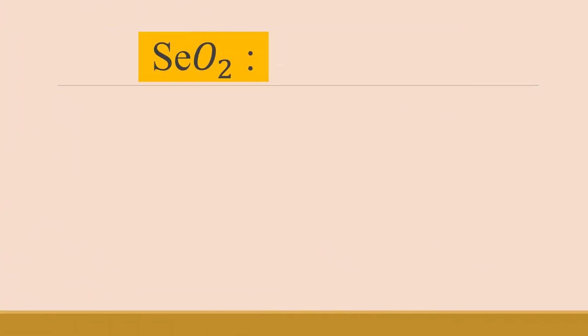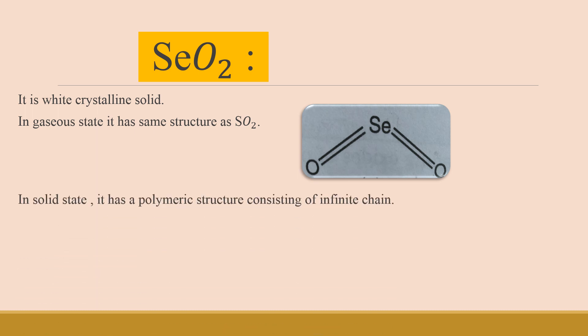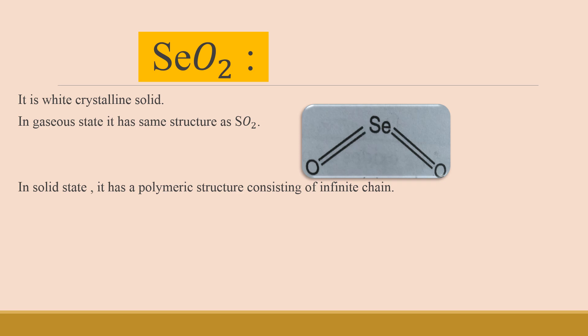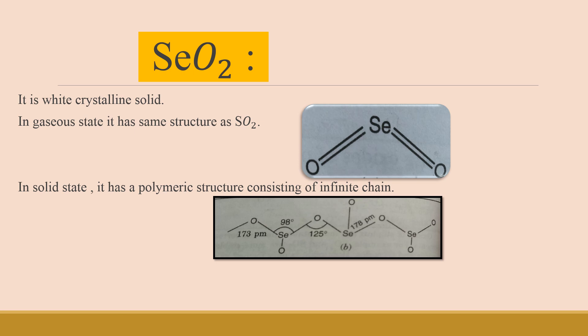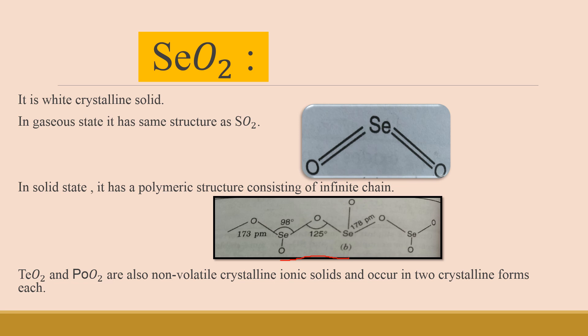The next dioxide of group 16 is selenium dioxide, SeO2. It is a white crystalline solid, and in the gaseous state it has the same bent structure as SO2. In the solid state, selenium dioxide has a polymeric structure consisting of infinite chains where SeO2 molecules combine in an infinite chain manner. Similarly, TeO2 and PoO2 are also non-volatile crystalline ionic solids and each occurs in two crystalline forms.